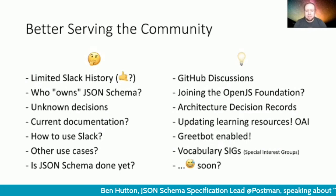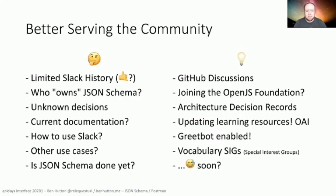We occasionally get questions about why things are a particular way in JSON Schema or why some decision was made. Sometimes we all know. Sometimes one person knows. Sometimes we really haven't got a clue because it was done by a previous team. I'm in the process of introducing Architecture Decision Records, or ADRs. ADRs are a simple set of documents using a template to help document important decisions. While you could argue a specification doesn't have an architecture as such, the principle is transferable. I look forward to being able to direct people to these documents in the future.